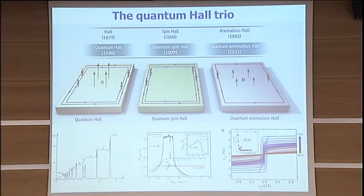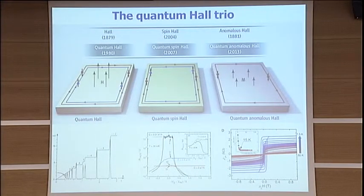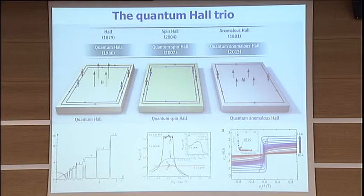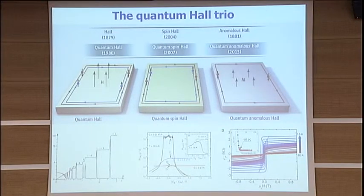For quite a while, this was the history. In 2007, the community started thinking: if there are three Hall effects and two of them already have an observed quantum version, what about the last possible member — which is the Quantum Anomalous Hall Effect? That's the discovery announced just this year, theoretically predicted by our group, that you can consider a topological insulator — bismuth telluride — and dope it to realize the Quantum Anomalous Hall Effect.